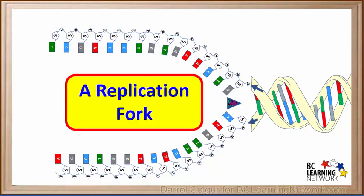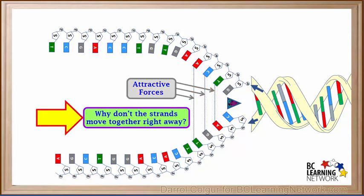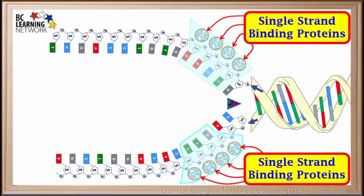What is formed here is called a replication fork. The single strands are like two prongs of a fork. Even though the base pairs from each strand have been separated, there are still attractive forces between them. Adenine attracts thymine and cytosine attracts guanine. So we might ask ourselves, why don't the two strands move back together right away? It turns out that molecules called single strand binding proteins bind themselves to the strands and hold them in place so they don't move back together. They are proteins that bind to the now single strands, hence the name single strand binding proteins.